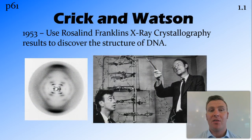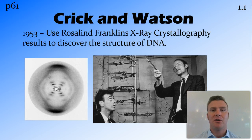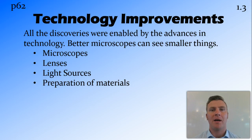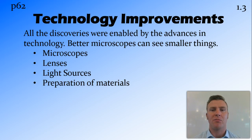In 1953 Watson and Crick used Rosalind Franklin's X-ray crystallography results — she came up with the key image — and they used that to discover the structure of DNA. As you can see, the story of cell theory and what we know about cells very tightly follows the advancement in technology, and in particular the technology of microscopes. As we got better microscopes, we were able to see smaller things and discover more.